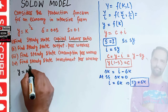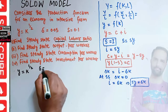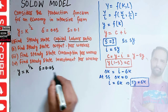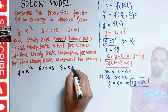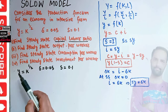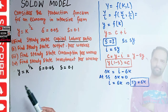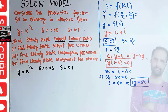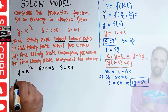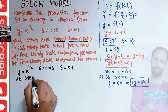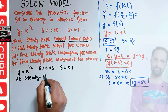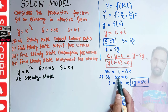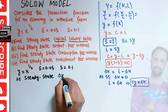Our depreciation rate is 0.05, which is five percent, and savings rate is equal to 0.1. This is the intensive form production function — output per worker as a function of capital per worker, the capital-labor ratio. Now since we have to find the steady state, at steady state our change in capital stock delta-k is equal to zero.